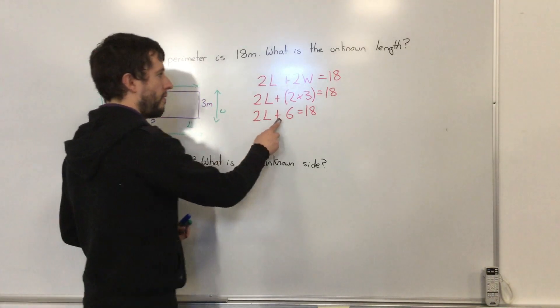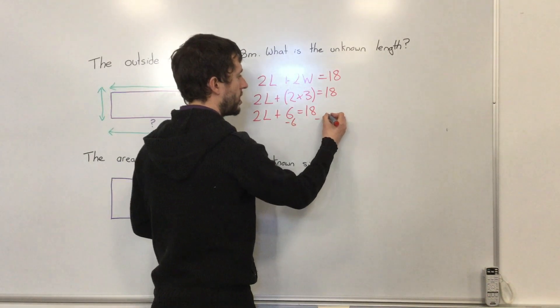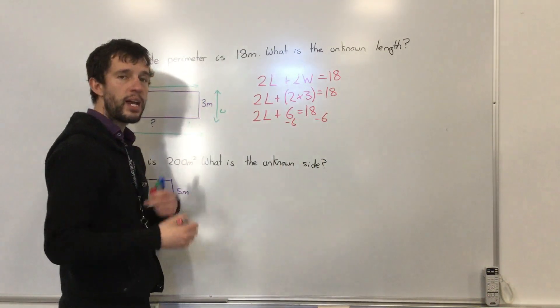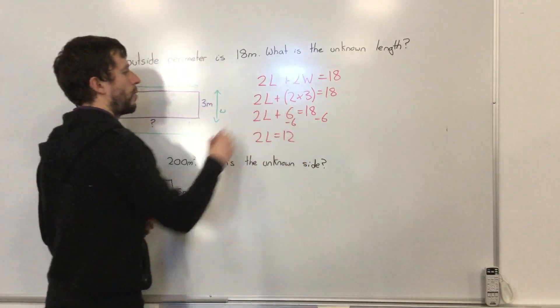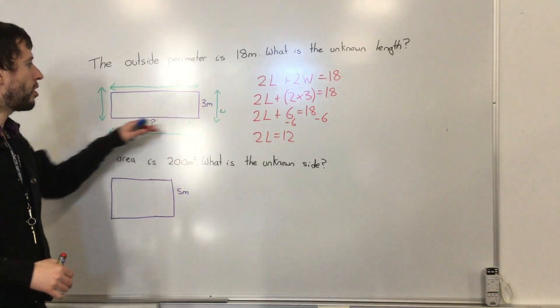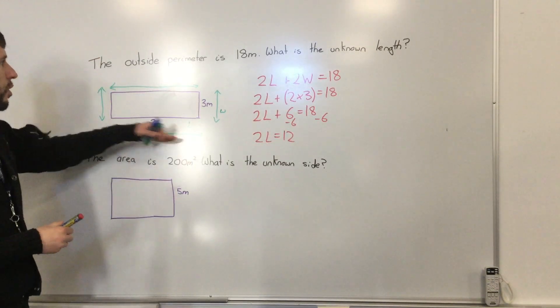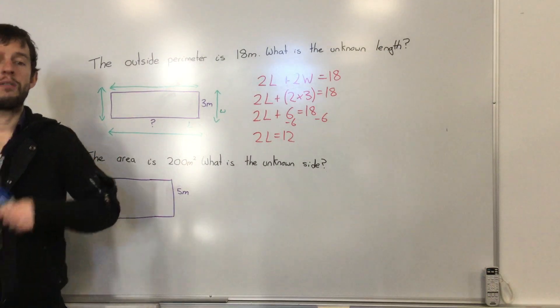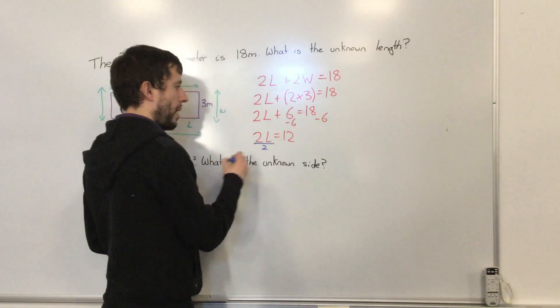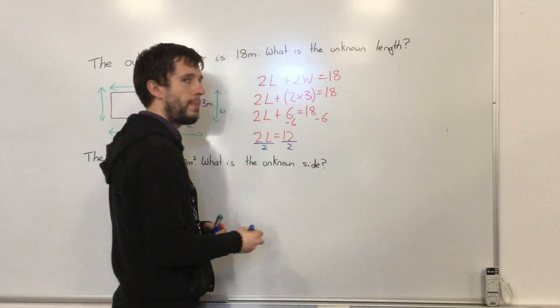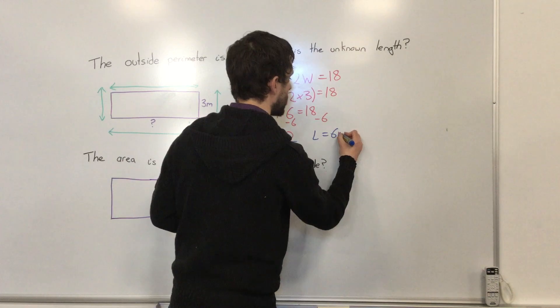So I know if I take 6 away from 18—remember algebra, we take 6 from both sides—18 take away 6 equals 12, and 6 take away 6 equals 0. So both of my lengths must equal 12. So if I've got both of these, I just need to divide it by 2 to get L by itself. So 12 divided by 2 equals 6. So the length equals 6 meters.